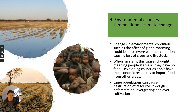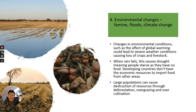Increasingly, there is more environmental change, directly related to global warming. With global warming, you get changes in weather patterns throughout the world, causing famine and floods. Certain areas become hotter or colder than usual, leading to severe weather conditions causing loss of crops and livestock. When rain fails, this causes drought, meaning people starve as they have no food. Developing countries don't have the economic resources to import food during a famine. With a growing population, it's also going to impact the environment and biodiversity — destroying resources through deforestation, overgrazing, and over-cultivation.